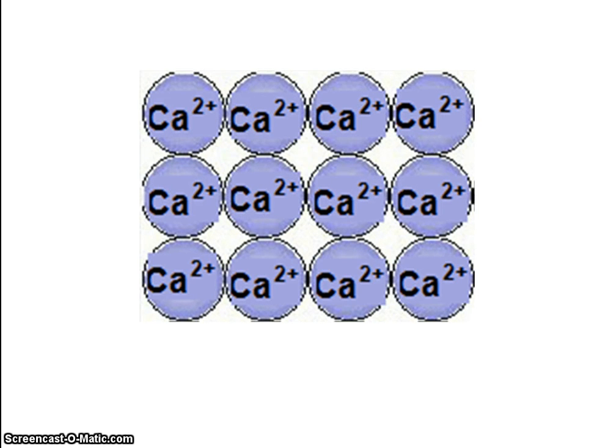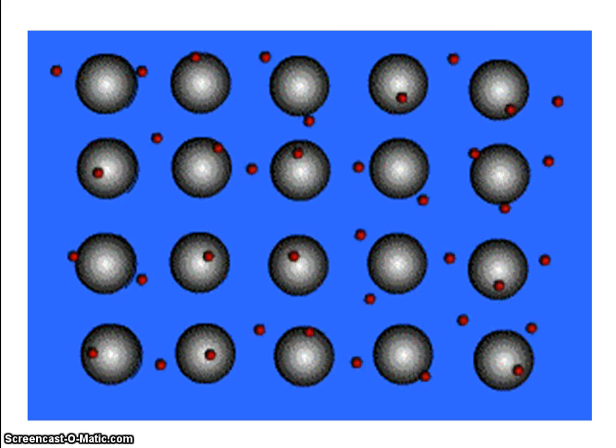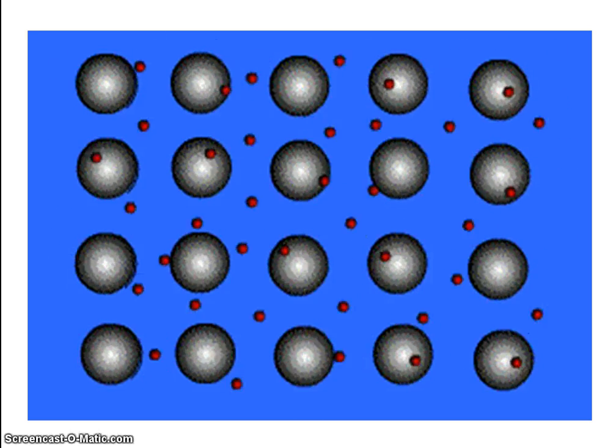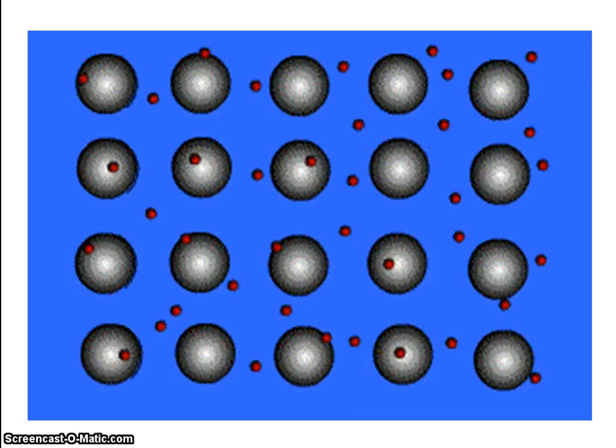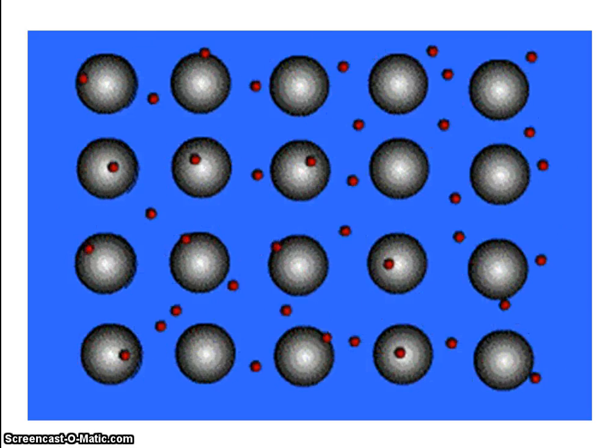Those electrons that have been lost from the atom are in fact delocalized around the calcium 2 plus ions. Here's an animation showing that delocalization of electrons and these electrons surrounding the positive metal ions.